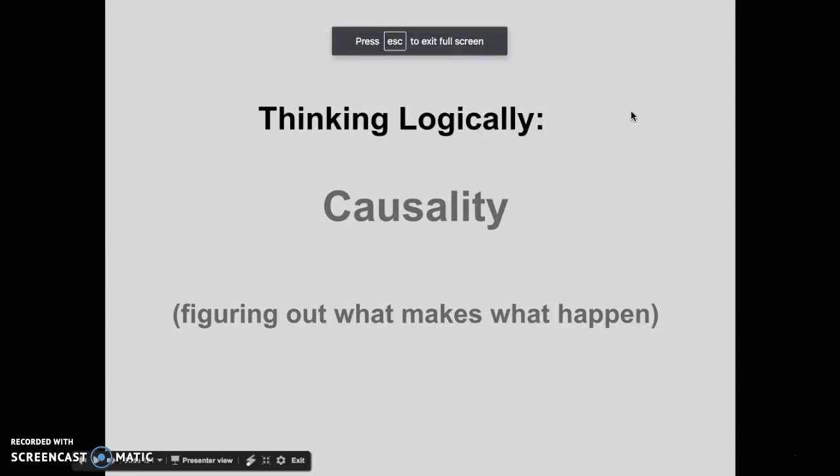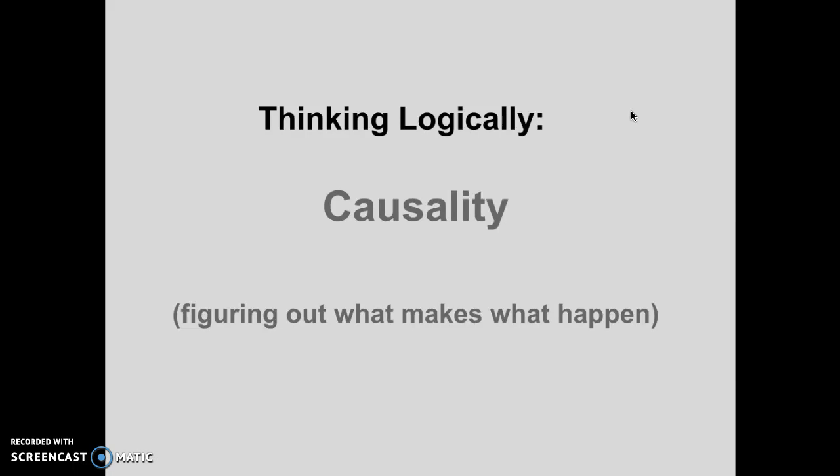Five down, two to go. This is the Critical Thinking Lecture on Causality, aka Figuring Out What Makes What Happen. This is probably my favorite section of the Critical Thinking Unit, and probably the most important thing I learned from my philosophy major.